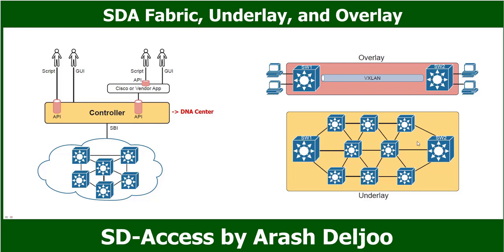In the underlay we can have multiple physical devices like switches and routers — in most cases switches — along with wired and wireless connections. Finally, we have IP connectivity to all nodes in the fabric. With this IP connectivity we can establish the overlay tunnels.